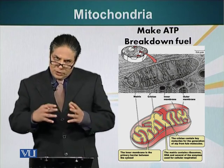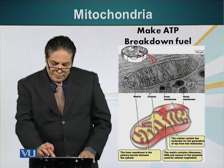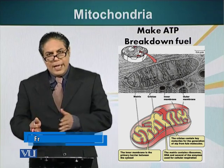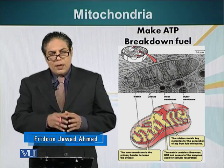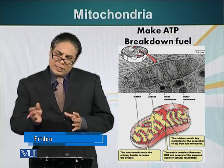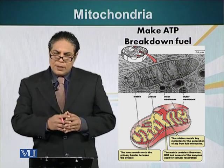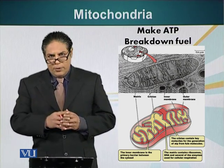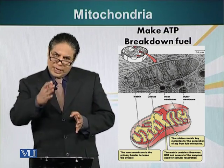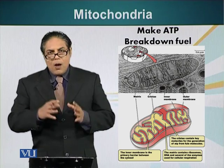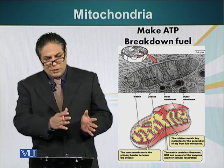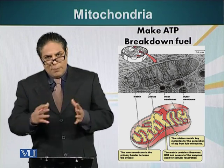Let's look at the structure of mitochondria first. Mitochondria are also a double-membranous structure. They have an outer membrane and an inner membrane. The outer membrane is not very selective — most materials can pass through it. The inner membrane of mitochondria is folded and it forms structures like little shells, which increases the surface area of the membrane.